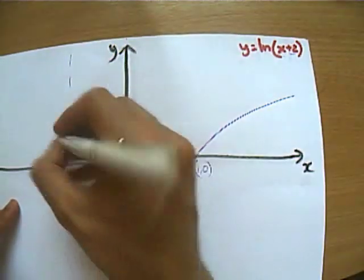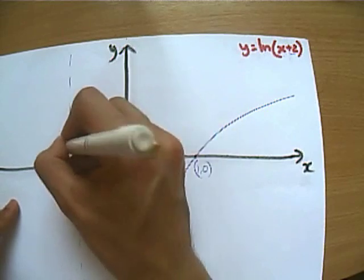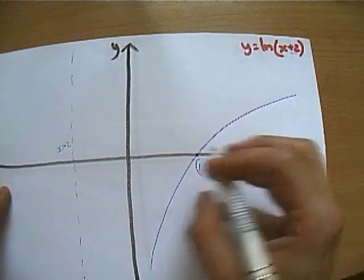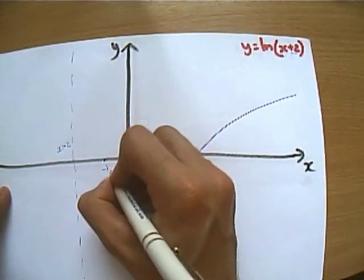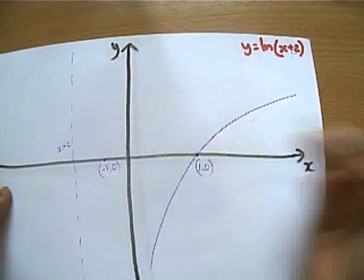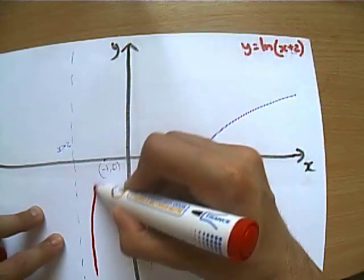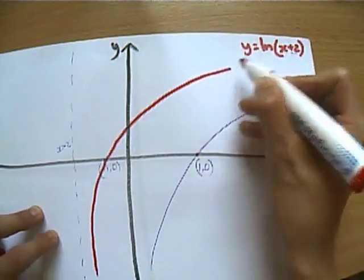So this asymptote is now going to be x equals minus 2. Then we're going to take this point, shift it 2 to the left, it's going to be at minus 1, 0. And the graph is going to maintain the same shape, so it's going to come up through and along.